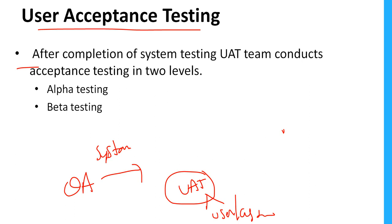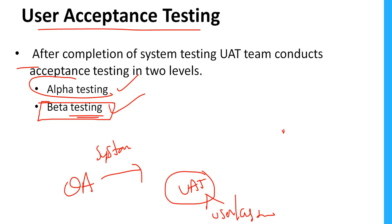UAT is conducted in two different levels: alpha testing and beta testing. Alpha testing means they will test the application in our environment, and beta testing means they will test the application in their own environment as a trial. Sometimes the customer also releases beta versions to the market to find defects at an initial level. Beta is not a stable build — it is like a trial or sample version of the software released to the market or customer.